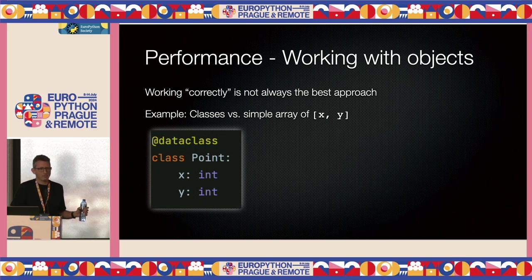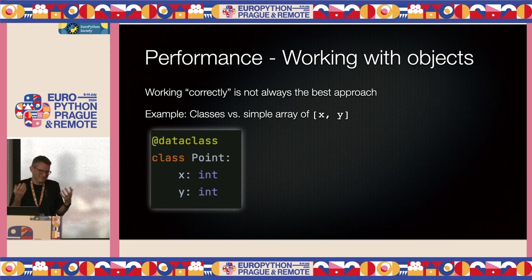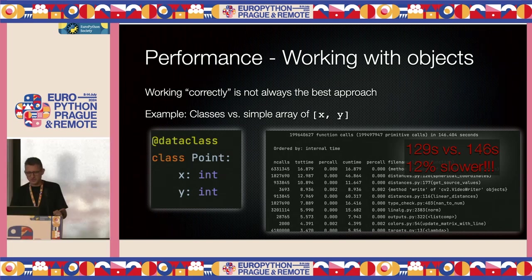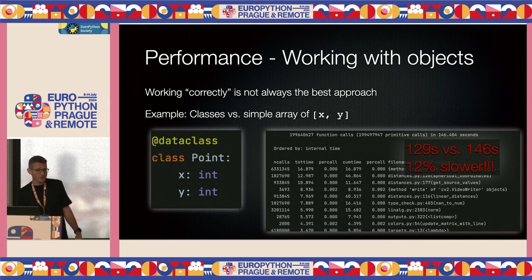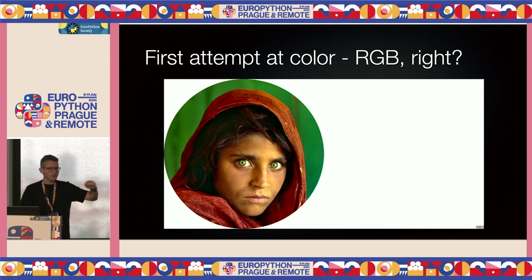I'm a serious developer, and serious developers don't use arrays for x and y points — you want to do it object-oriented, you want to be correct, you want the benefits of having a class where you can reference dot-x and dot-y and not just square bracket zero and one. So I replaced the whole codebase with a dataclass and was very proud of myself. The right thing cost me a 12% penalty in performance, because working with objects involves object allocation and deallocation. Lesson learned: sometimes it's okay not to be absolutely correct, as long as you know what you're doing.